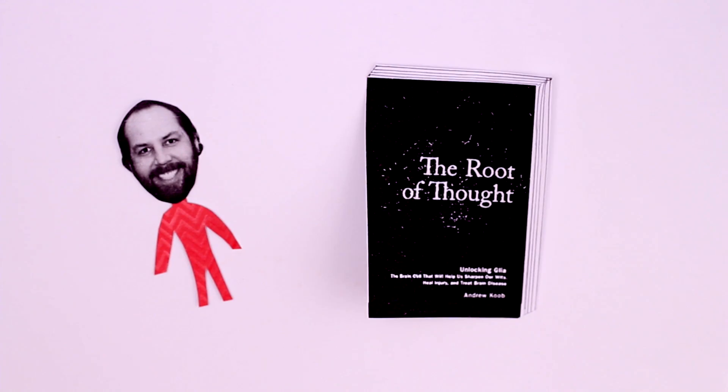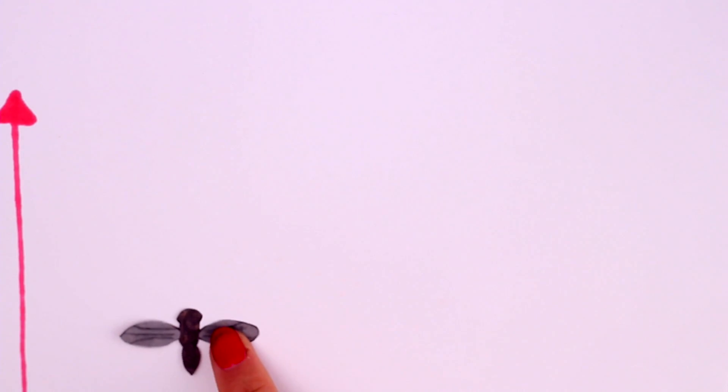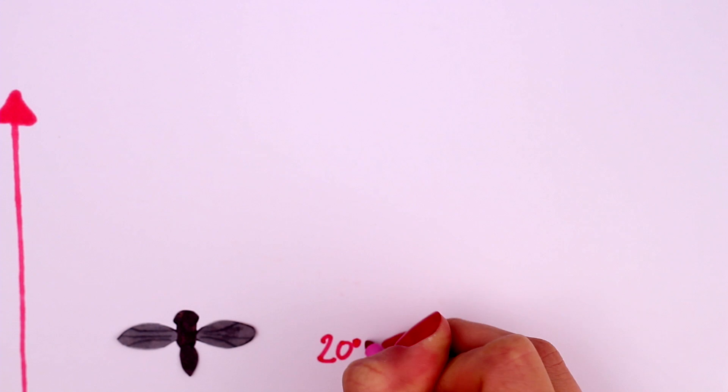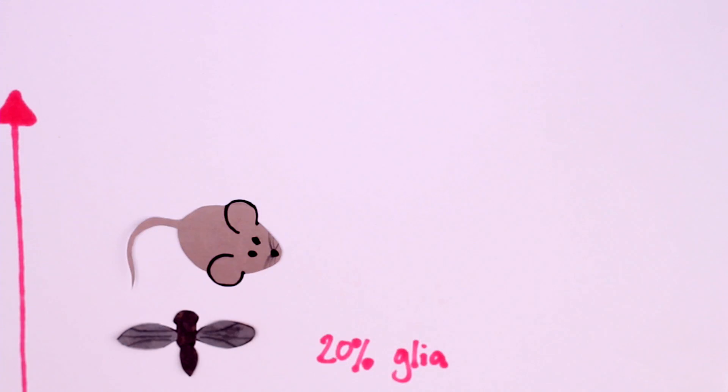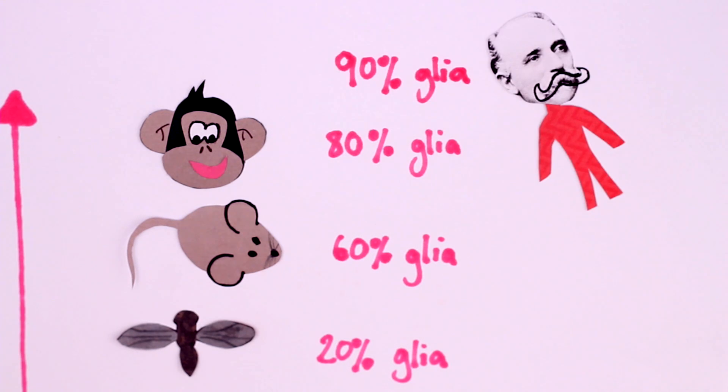Neuroscientist Andrew Koob believes that glia are the root of all thought. He writes that as you move up the evolutionary ladder, the percentage of glia in brains increases with our definition of intelligence. The brain of a fruit fly is 20% glia, a mouse 60%, a chimpanzee 80% and a human 90%. This rather strongly suggests that glia are more than just glue.